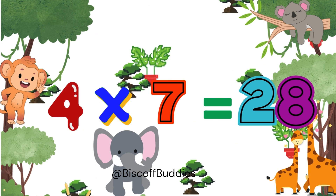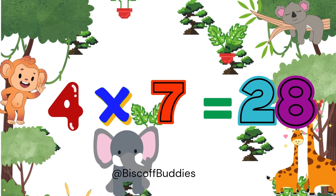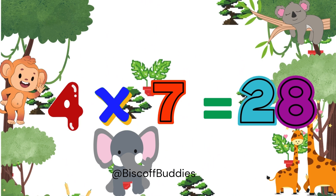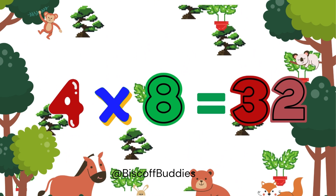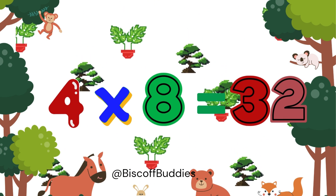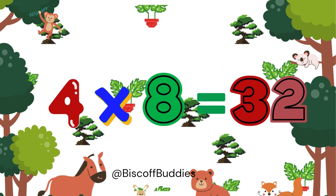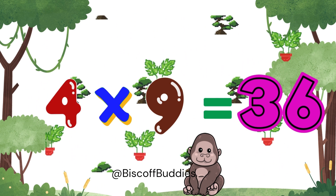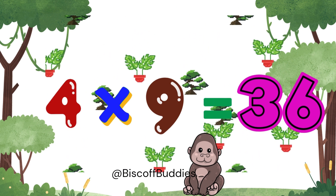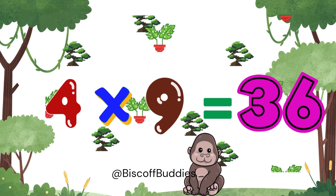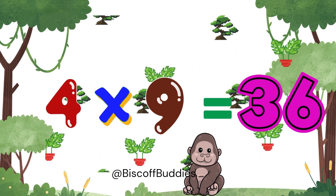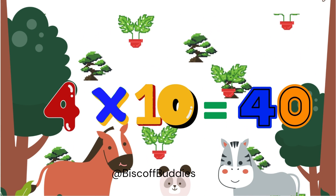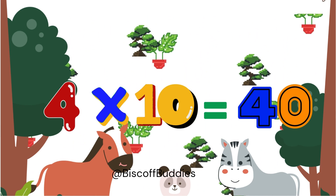4 times 7 is 28. 4 times 8 is 32, great. 4 times 9 is 36. 4 times 10 is 40, what a fix.